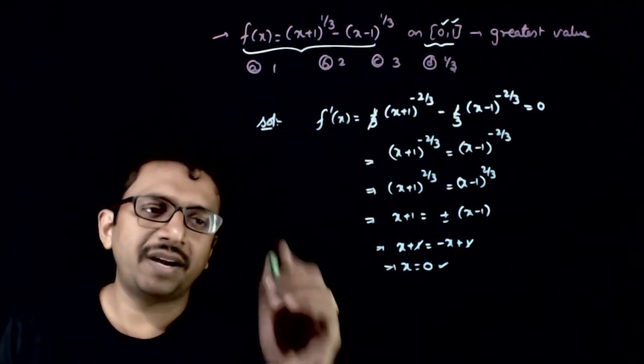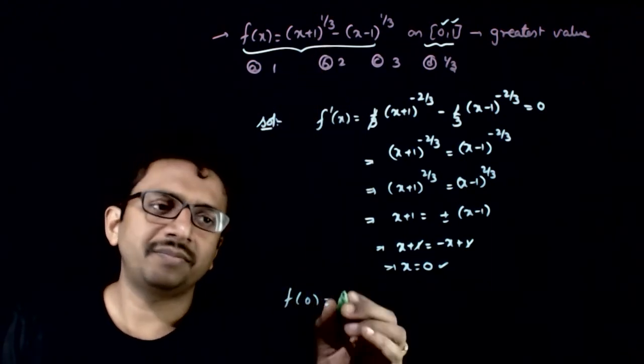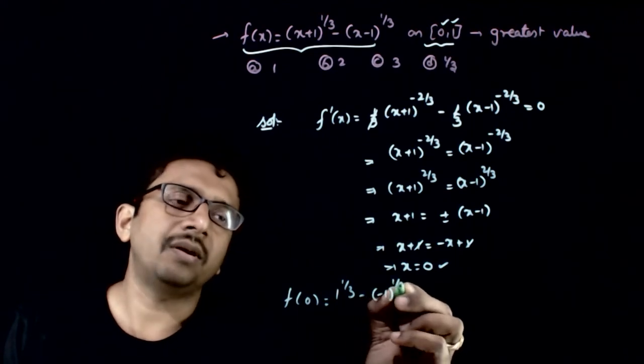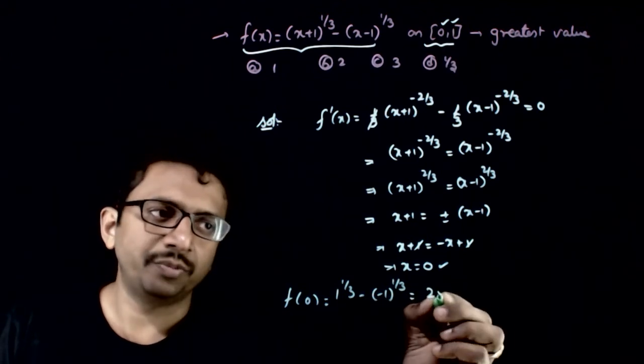Now let us find f of 0. f of 0 is nothing but 1 power 1 by 3 minus of minus 1 power 1 by 3. That is nothing but 1 minus of minus 1 is 2.